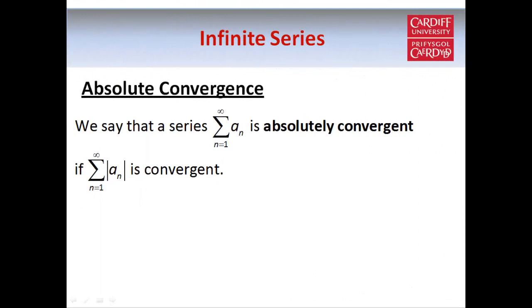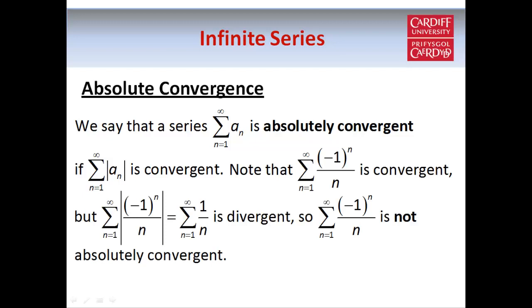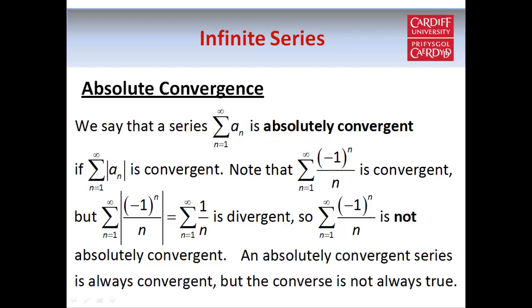As one final point, here's the definition of absolute convergence. We say that a series a_n is absolutely convergent if the series of |a_n| is convergent. In the previous example, we used the alternating series test to show that (-1)^n/n is convergent. However, if you take the modulus of (-1)^n/n, it gives you 1/n. We've already seen that the series 1/n — the harmonic series — is not convergent. So therefore (-1)^n/n is convergent but not absolutely convergent. And if a series is absolutely convergent, then it will always be convergent; however, the converse is not true — if a series is convergent, you can't necessarily say it's absolutely convergent, as this example has shown.